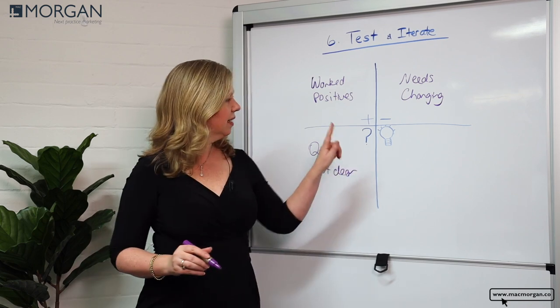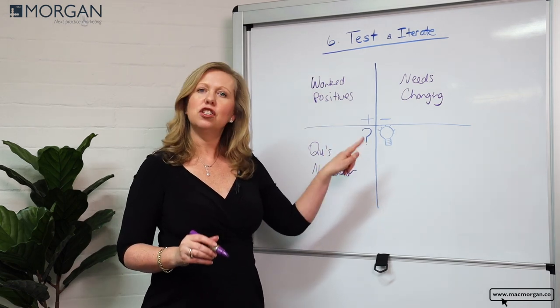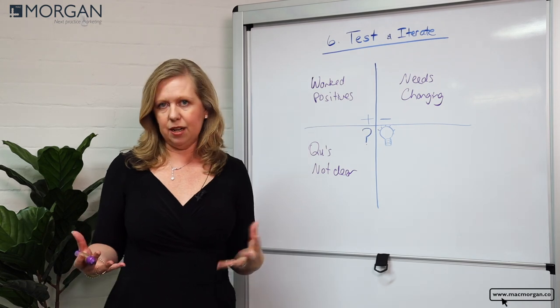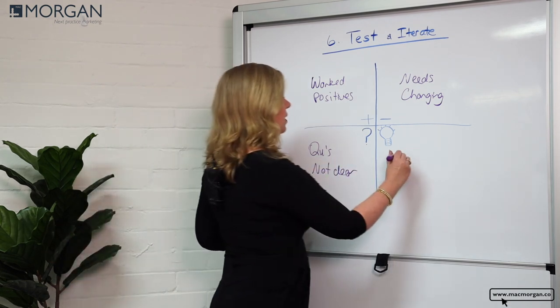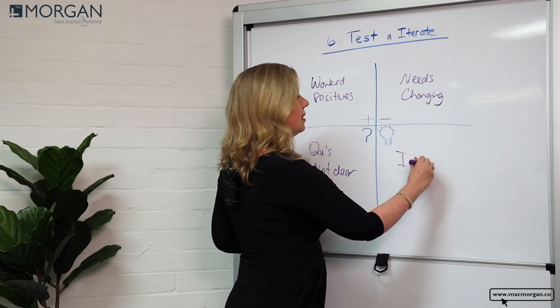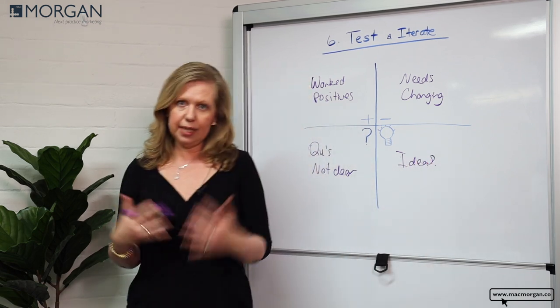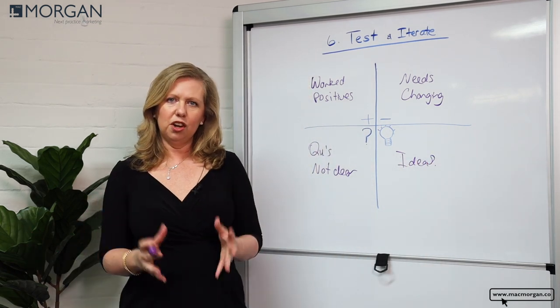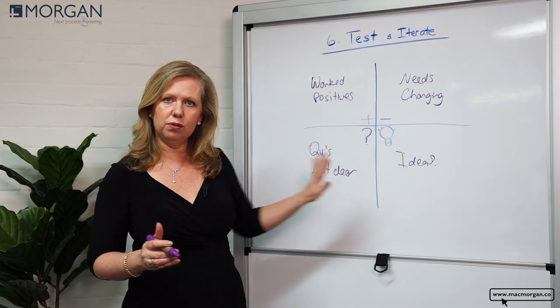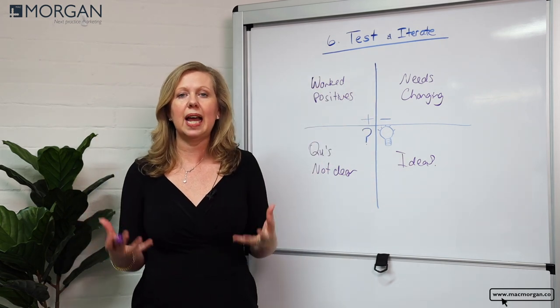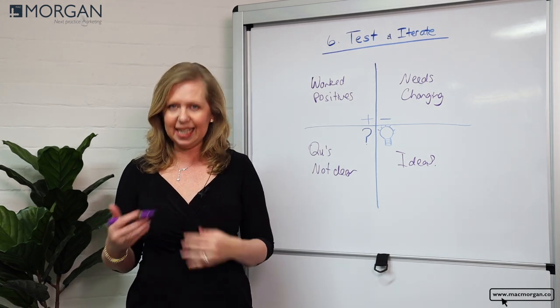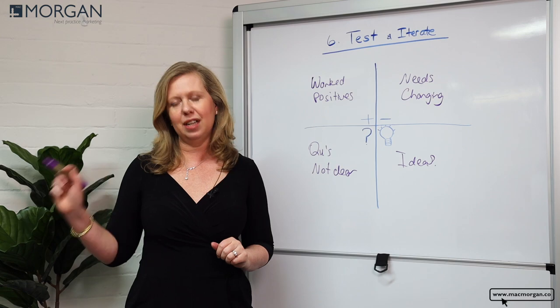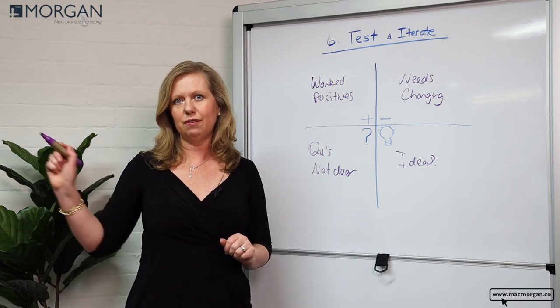And then finally there's the light bulb moments. So through them being users, what suggestions do they have? What are the ideas that would make this even better and continue to improve it? So here you have the four different quadrants which will enable you to stay close to your customer or consumer and continually iterate to improve your innovation and continue to drive growth.